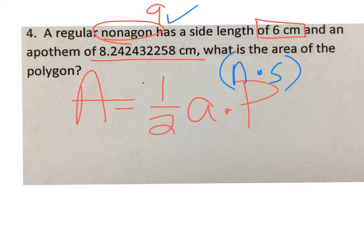So we know there's nine sides, we know it has a side length of six, we know the apothem. This is plugging into our formula and then putting it into our calculator.